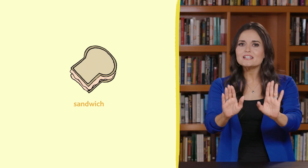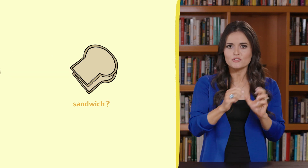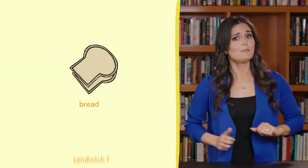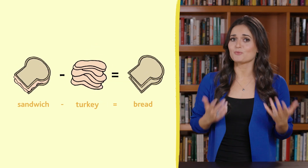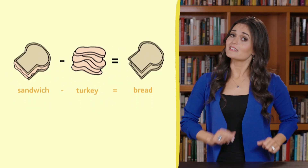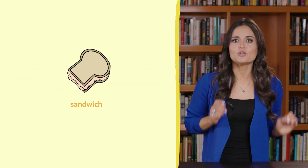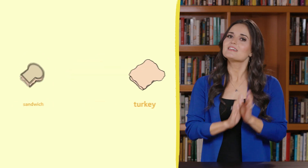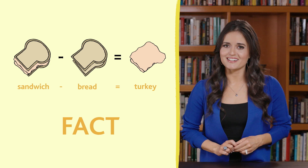But what if instead we wanted to take apart the sandwich — destroy it? If we took the turkey off, would we still have a sandwich? Nope. We'd be left with just the bread. Sandwich minus turkey equals bread. That's another fact. What if instead we started off with a sandwich and took away the bread? We'd be left with just the turkey. That sandwich sentence looks like this: sandwich minus bread equals turkey. Yet another fact.